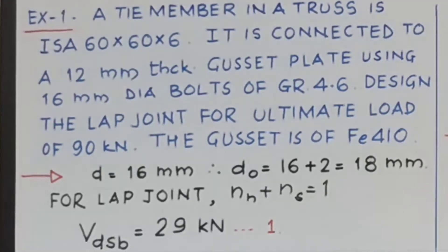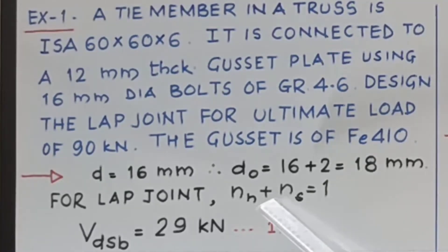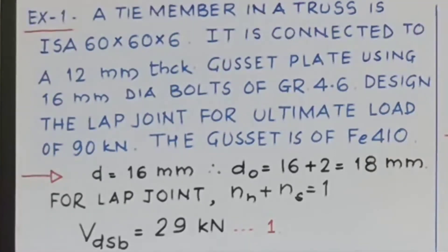We have to provide lap joint. So for lap joint, we know that NS plus NN is equal to 1. We take NS is equal to 0, so NN will be equal to 1.